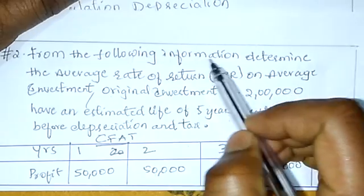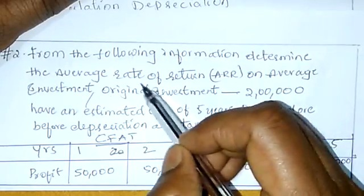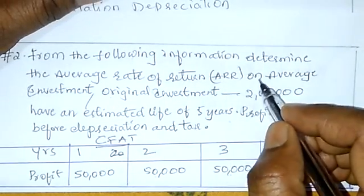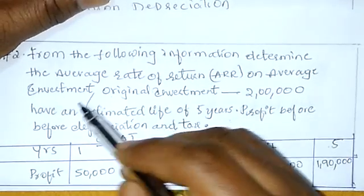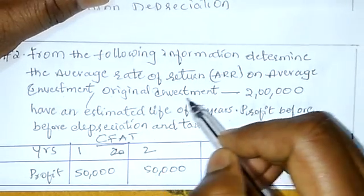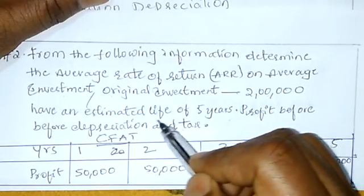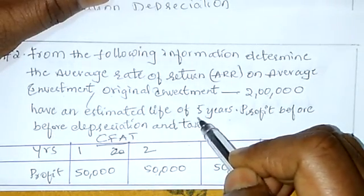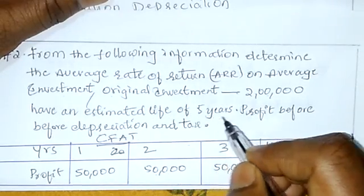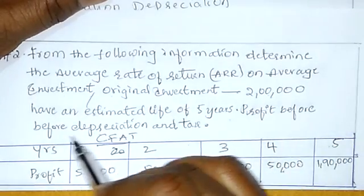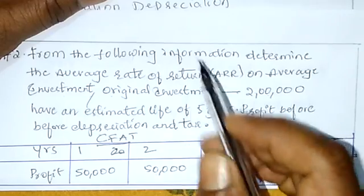From the following information, determine average rate of return (ARR) on average investment. Original investment is 2 lakhs, with an estimated life of 5 years. Profit before depreciation and tax is given.